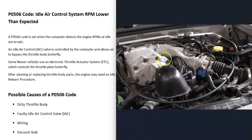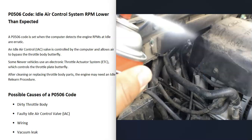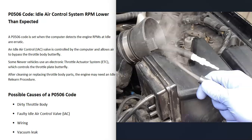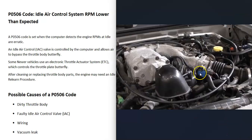Another possible cause of this code is that air is getting into the engine and going around the throttle body, since all the air should be flowing through it. If there's a vacuum leak or an intake leak, that's going to cause issues and can throw this code — things like a disconnected hose or bad valve cover gaskets. Some mechanics use a spray method: start the engine and spray around suspected leak areas; if the idle changes, you've found the leak. Another method is the smoke machine method, where you feed smoke into the air intake and wherever the smoke comes out, you've found the leak.